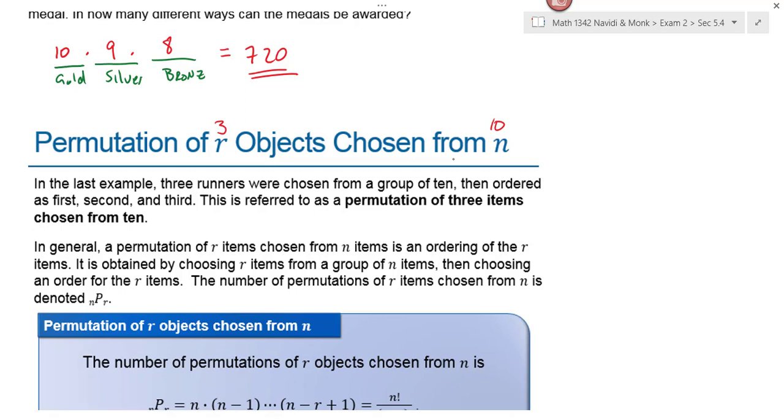So in the last example, three runners were chosen from a group of ten, then ordered first, second, or third. This is referred to as a permutation of three items chosen from ten. In general, the permutation of r items chosen from n items is an ordering of the r items. It's obtained by choosing r items from a group of n items and then choosing an order for the r items. This is all a long, complicated, convoluted way of saying the way we do permutations when you're not using everything is this formula right here, where n represents your size of your sample and r represents the number that you're selecting out of that sample. n has always got to be first and it's always got to be the bigger number. You can only choose a few out of everything you have. You can't choose everything out of a few.